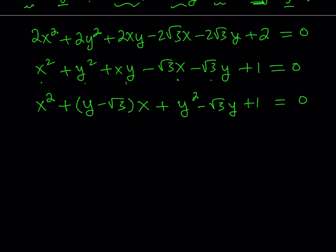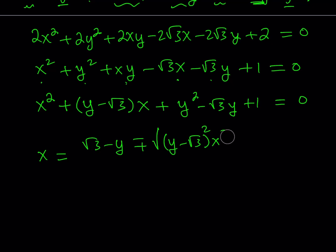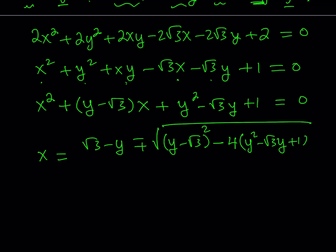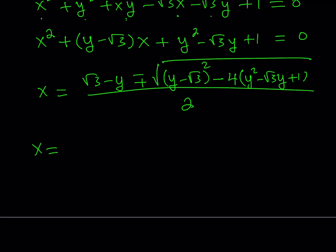Using the quadratic formula, x equals negative b, which is square root of 3 minus y, plus or minus the square root of b squared minus 4ac, all divided by 2. Here b squared is (y minus root 3) squared and c is y squared minus root 3 y plus 1. So the discriminant is (y minus root 3) squared minus 4 times (y squared minus root 3 y plus 1), divided by 2.